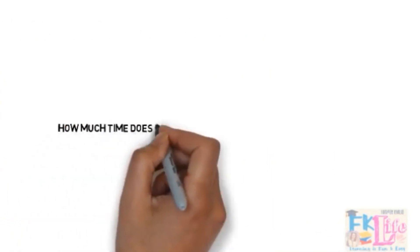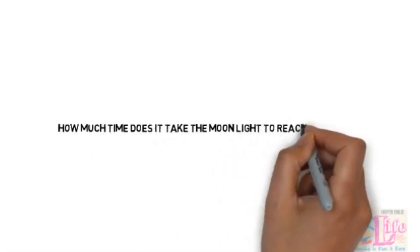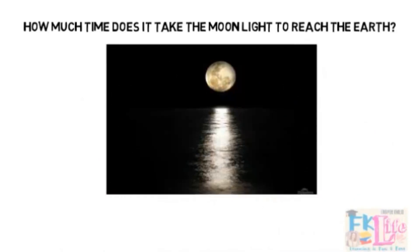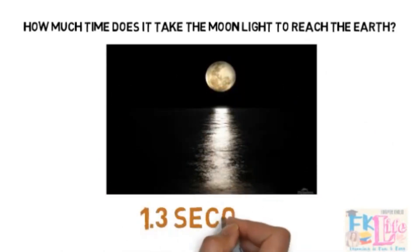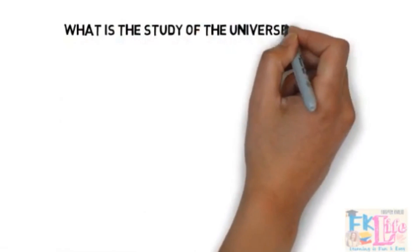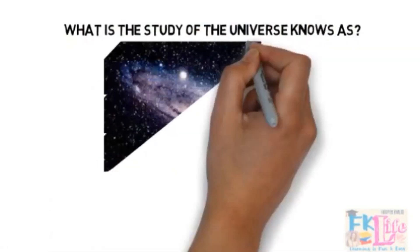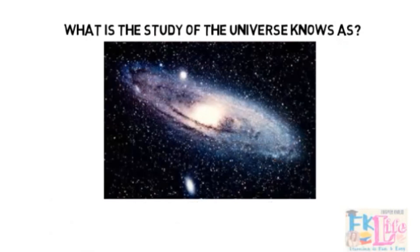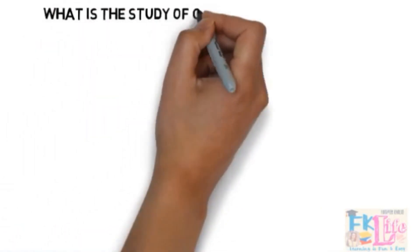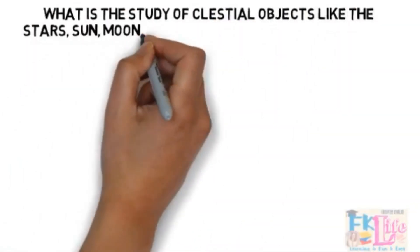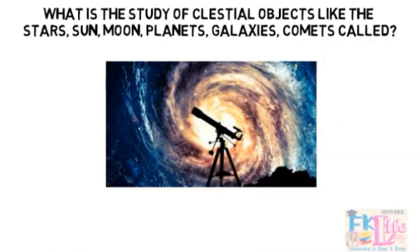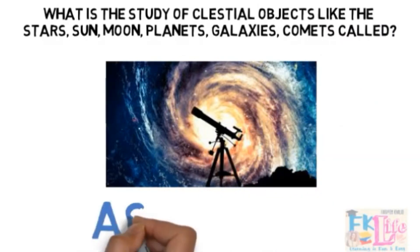How much time does it take for moonlight to reach the Earth? It takes 1.3 seconds. What is the study of the universe known as? It's known as cosmology. What is the study of celestial objects like stars, the sun, moon, planets, galaxies, and comets called? It's called astronomy.